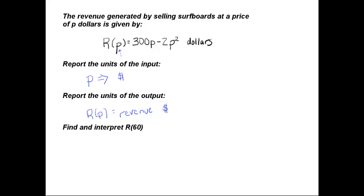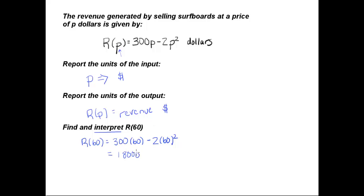The last thing we're supposed to do is find and interpret r of 60. Let's first find r of 60. r of 60 is going to be 300 times 60 minus 2 times 60 squared. 300 times 60 is 18,000, and 2 times 60 squared is 7,200. So this gives me 10,800.